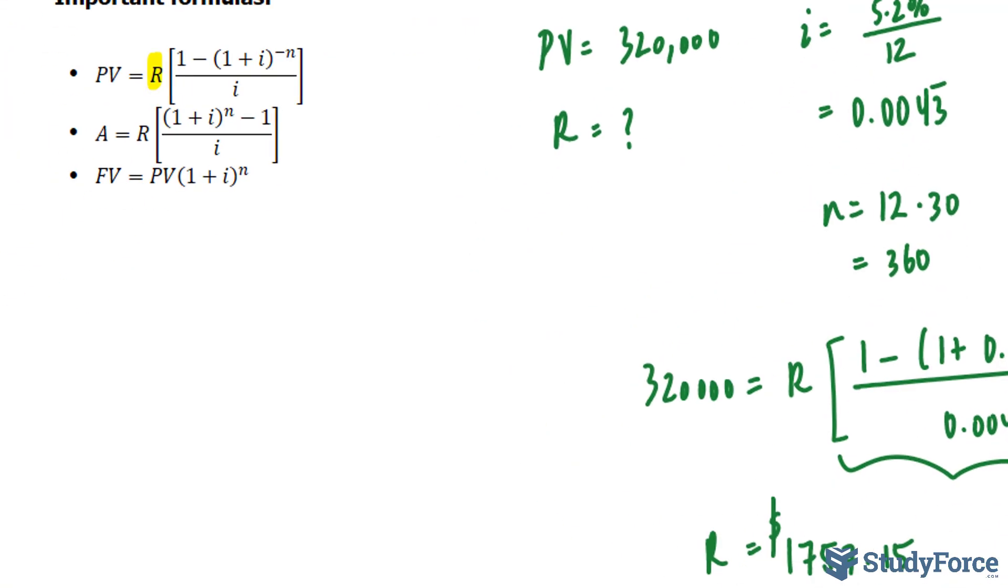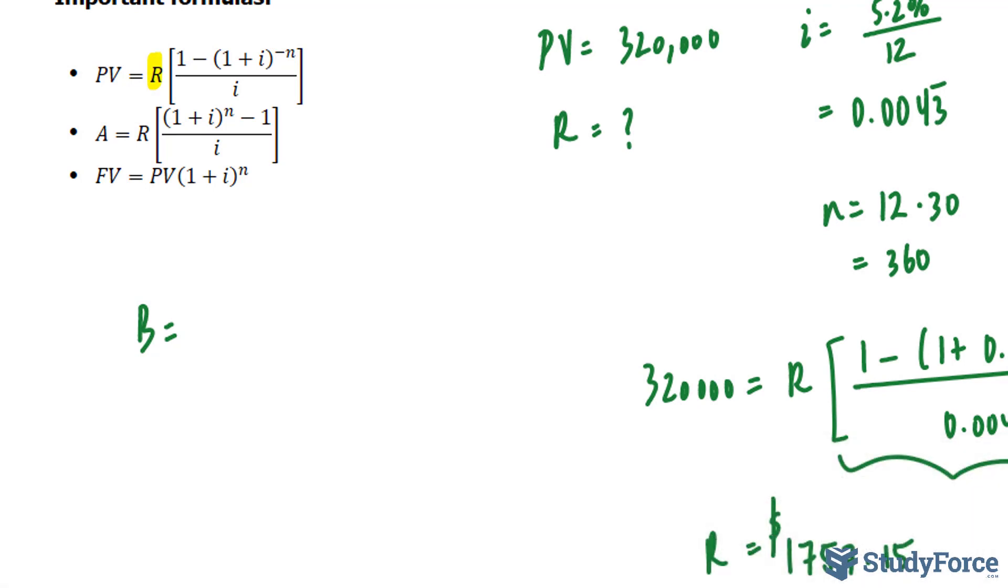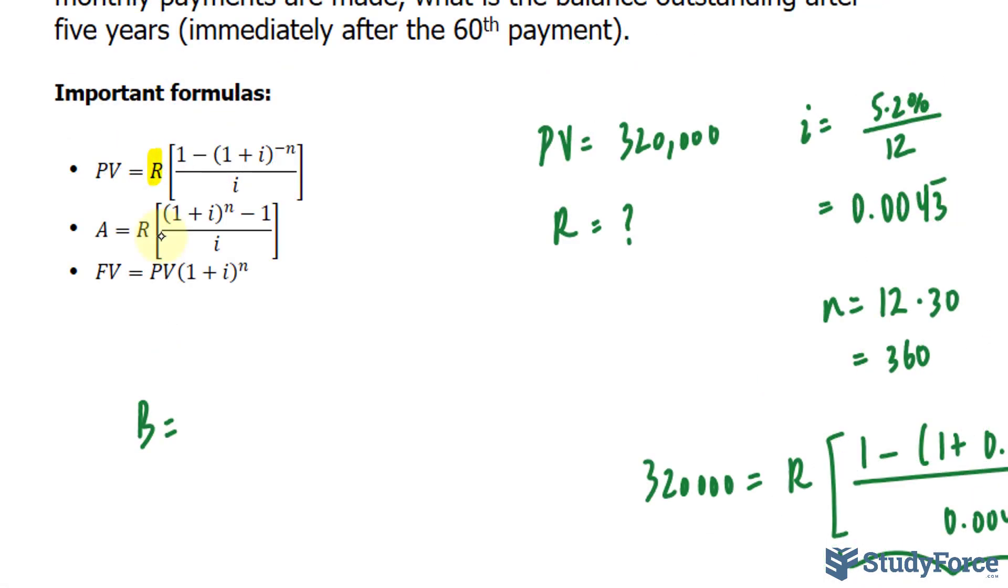Now we're ready to find the balance. So the balance is found by taking the amount of compound interest on the 320,000 that you have acquired as a loan, and subtracting from that the accumulated value of what we just calculated after 60 payments. Now if that's confusing to you, here's what I mean.